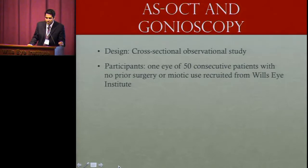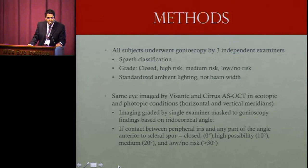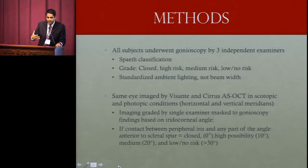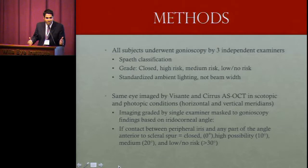This was a cross-sectional observational study. We looked at one eye of 50 consecutive patients with no prior surgery and not on any miotics, recruited through our institute. Each patient underwent examination by three independent examiners, who performed SPACE classification gonioscopy and also estimated a grade of closed, high risk, medium risk, or low-to-no risk of going on to angle closure. This was done with standardized ambient lighting, but beam width was not standardized, to approximate real-life conditions.